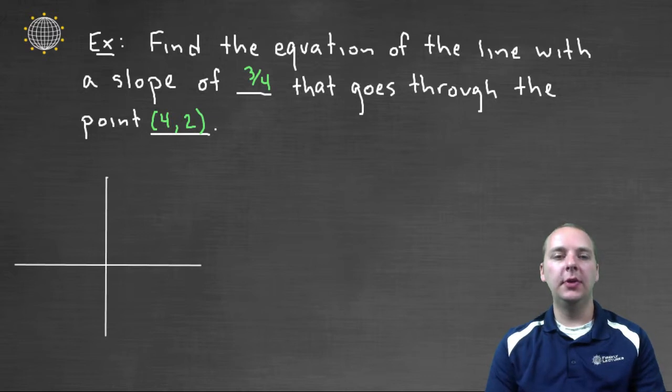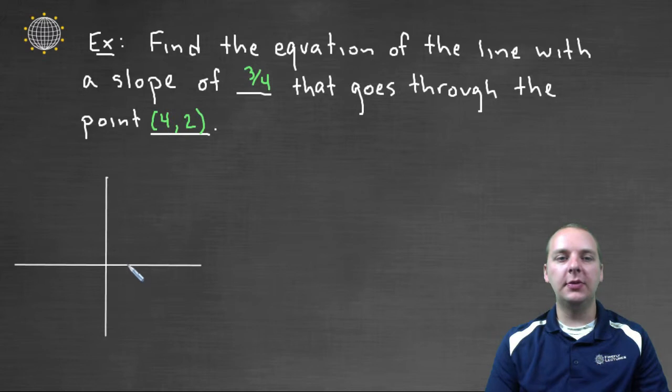Let's try one last one to finish up this video. Here it says find the equation of the line with a slope of three fourths that goes through the point four comma two. So let me just get a rough sketch of this. Not that I need a rough sketch, but it would just help us think about this graph. So it has a point one, two, three, four comma one, two. So it goes through this point.